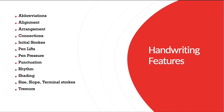These are the different handwriting features that are present in a handwriting: abbreviations, alignment, arrangement, connections, pen lift, pen pressure, pauses, punctuation, rhythm, shading, and tremors.